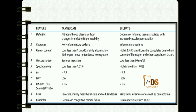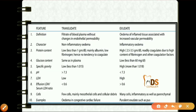The transudate means the filtrate of blood plasma without any changes in the endothelial permeability, whereas in the exudate there is increased vascular permeability. Transudate is non-inflammatory whereas exudate is inflammatory. Protein content is very low in transudate — less than 1 gram per deciliter — whereas it is high in exudate, at 2.5 to 3.5 grams per deciliter.